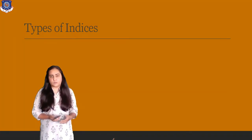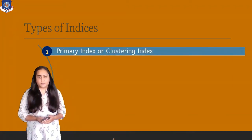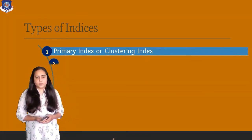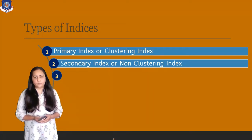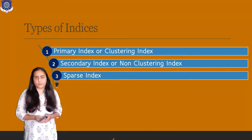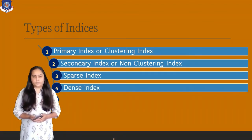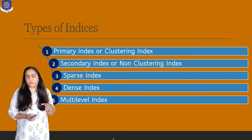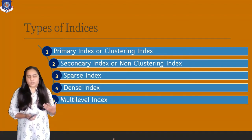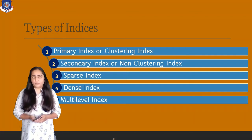That's why we use indices in DBMS — they make access to the database a lot faster when reading from secondary memory. There are several types of indices: the first is a primary index or clustering index, the second is a secondary index or non-clustering index, the third is a sparse index, the fourth is a dense index, and the fifth is a multi-level index. In this video I'll cover the first four; the fifth is covered in two separate videos.